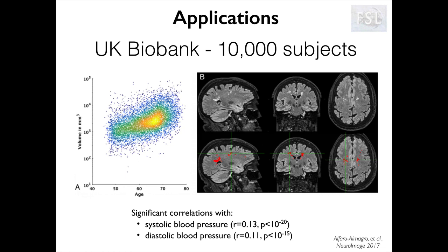Bianca is now used in the UK Biobank Imaging study — the biggest brain MRI dataset in the world, which includes many modalities including FLAIR and will eventually include 100,000 subjects. These are results from the first 10,000 subjects, and in addition to the correlation with age, we also found a strong correlation with blood pressure, which is not surprising because white matter hyperintensities are more frequent in hypertensive people.